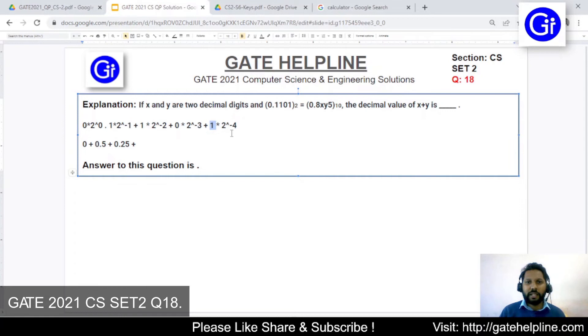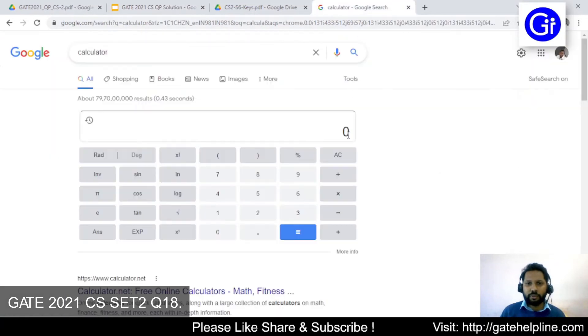It is 1 multiplied by 2 raised to power minus 4. So 2 raised to power minus 4 is 1 upon 2 raised to power 4, which is 16. So 1 upon 16. We will go to calculator on Google.